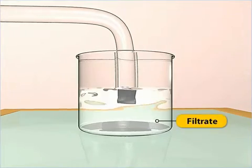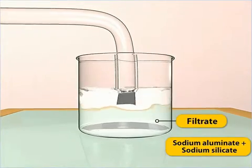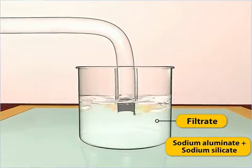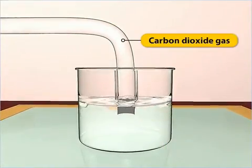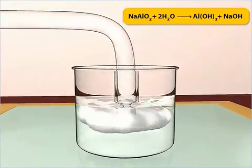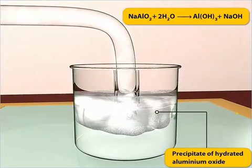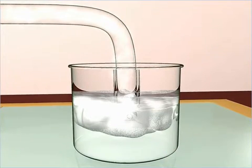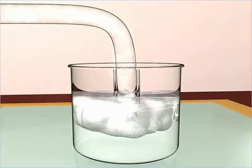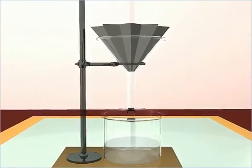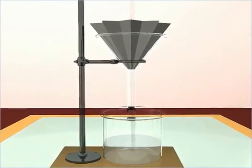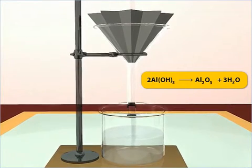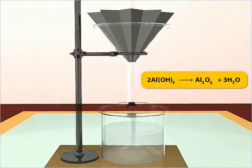The filtrate containing the sodium aluminate and sodium silicate is further treated with carbon dioxide gas. This leads to the precipitation of hydrated aluminum oxide, leaving behind sodium silicate in the solution. The hydrated aluminum oxide is then filtered out and heated strongly to form pure aluminum oxide.